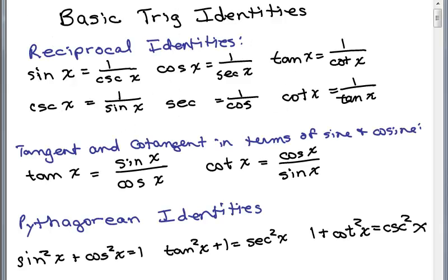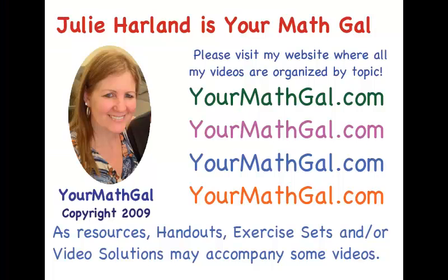To summarize, the basic trig identities covered are: the reciprocal identities, tangent and cotangent written in terms of sine and cosine, and the three Pythagorean identities. This is YourMathGal, Julie Harland. Please visit my website at yourmathgal.com where all of my videos are organized by topic.